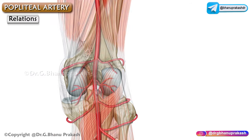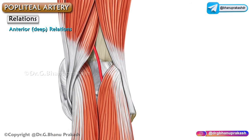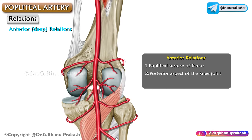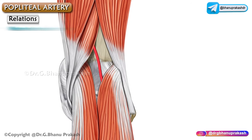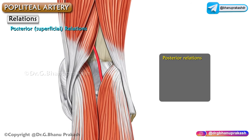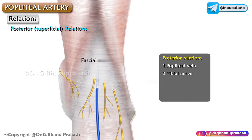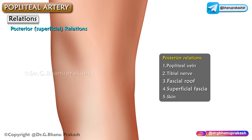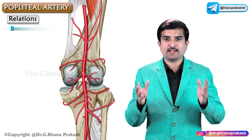The anterior or deep relations are the floor of the popliteal fossa, that is the popliteal surface of the femur, posterior aspect of the knee joint, and the fascia covering popliteus muscles. The superficial or posterior relations are the popliteal vein, tibial nerve, fascial roof, superficial fascia, and the skin — from deep to superficial.